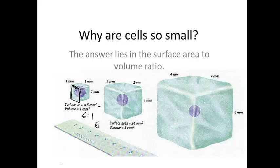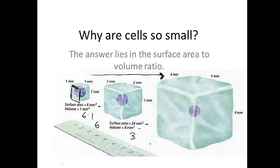Now let's see what happens if the cell grows — the length doubles to 2 millimeters. The surface area is now 2 by 2, which is 4 square millimeters, times 6 sides: 24 square millimeters. The volume is 2 times 2 times 2, which is 8 cubic millimeters. The surface area to volume ratio in this case is 3. So as the cell gets bigger, the surface area increases and the volume also increases, but the volume increases at a faster rate, meaning the surface area to volume ratio goes down.